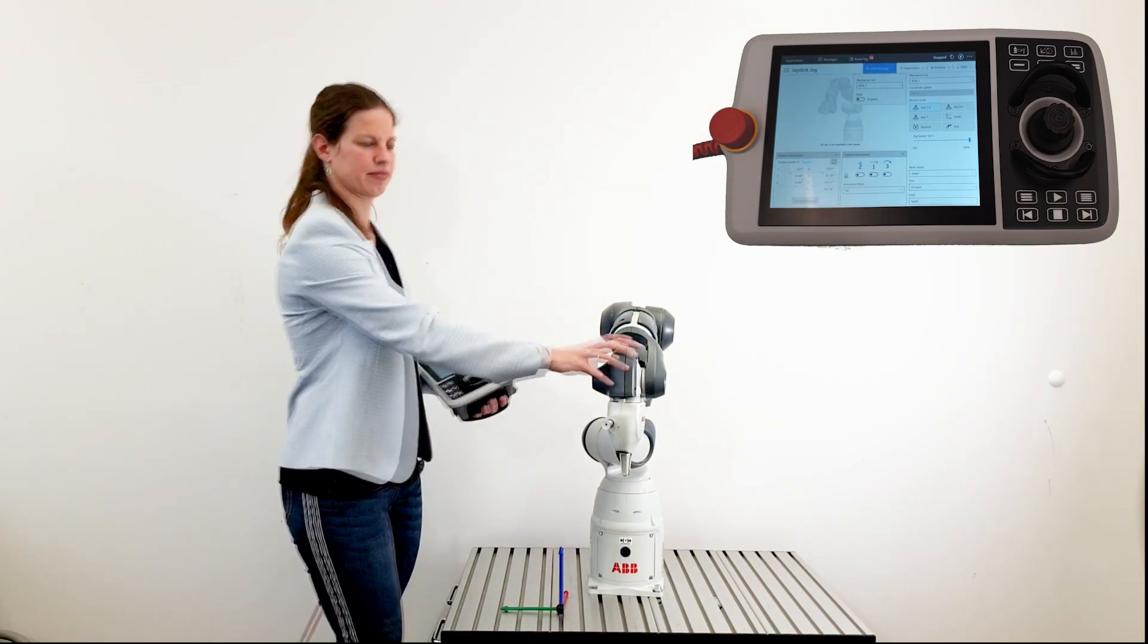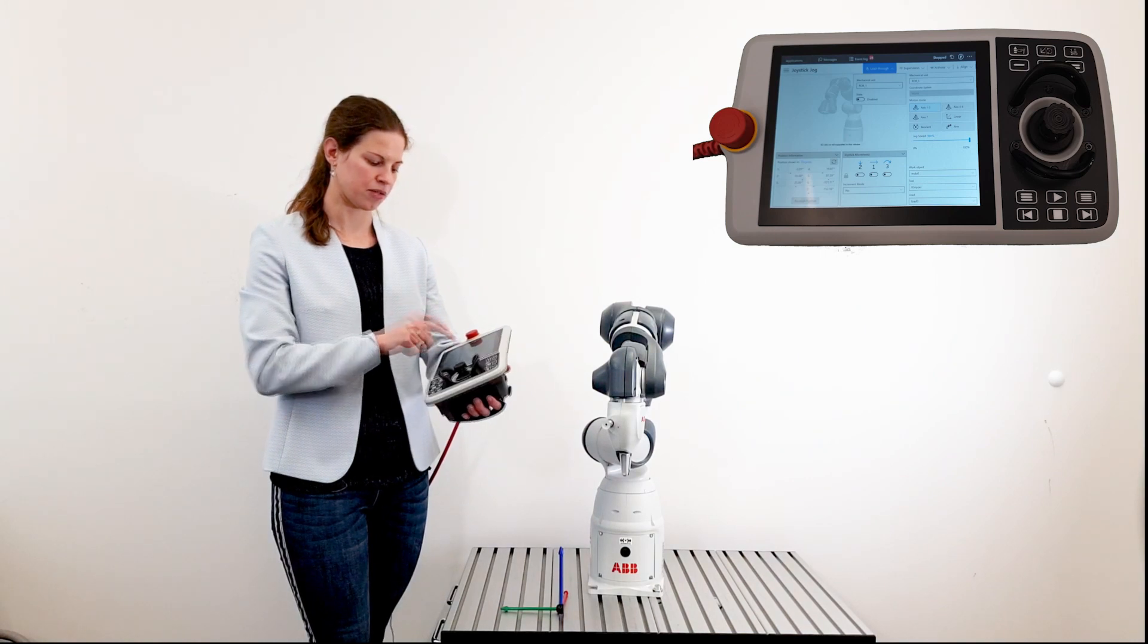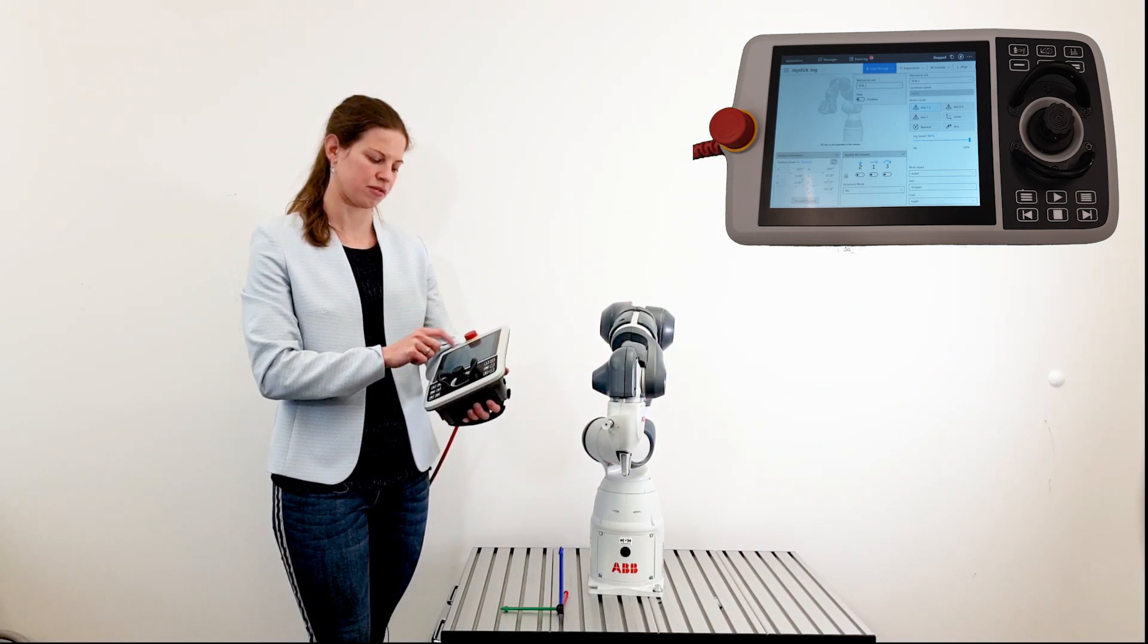Disable lead through. We jog with a joystick on the flex panel and select axis 1, 2, 3.